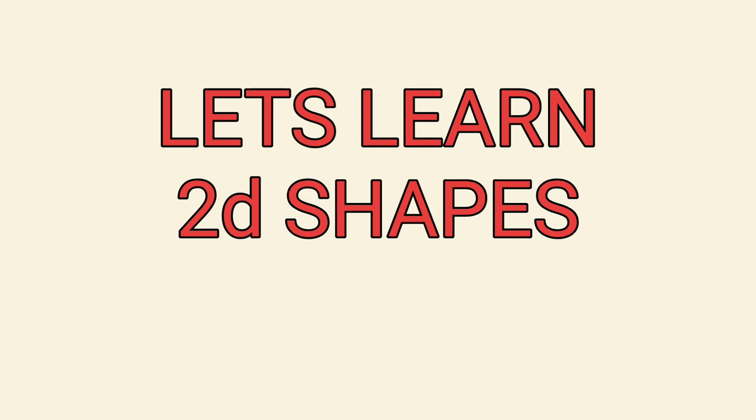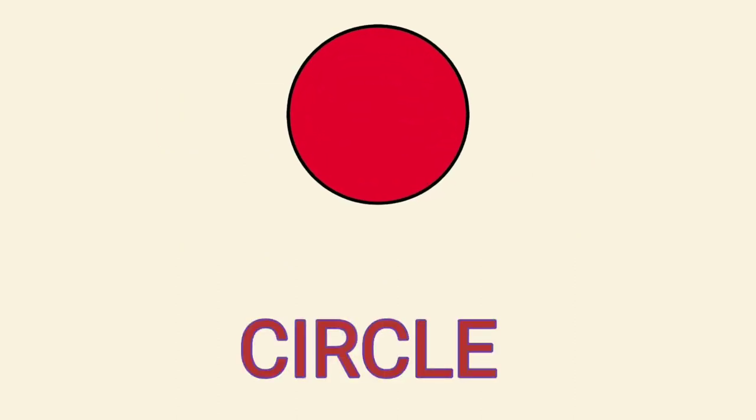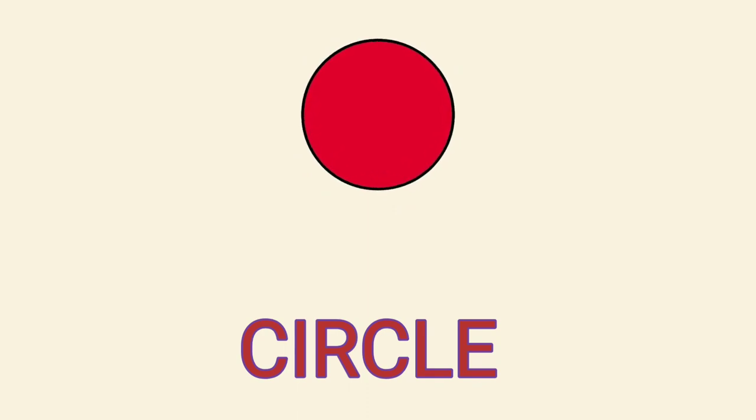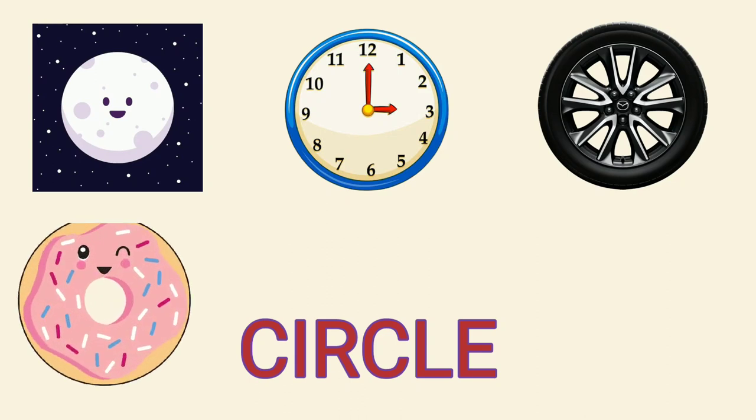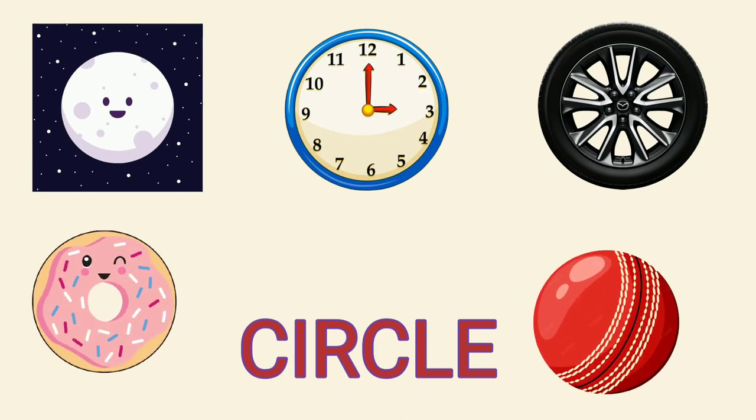Let's learn 2D Shapes. Circle has no sides. Examples: Moon, Clock, Wheel, Donut, Ball.